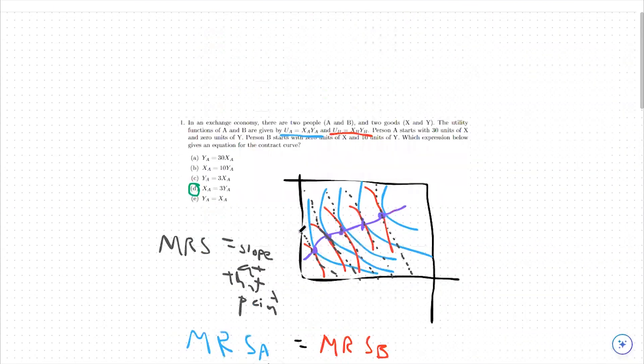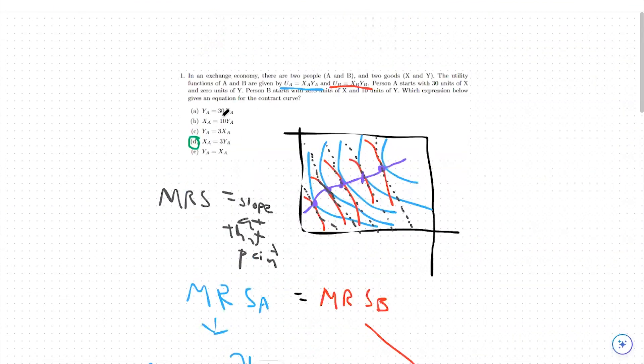Based off of the things available to us, the answer choices available to us, we're either in terms of YA or XA for these equations. So you just have to take a look, because you could get one third XA equals YA, for instance - that's the same exact contract curve. All we have to do is multiply by three on both sides, and then we're here. Either way, you can get to that answer. You just have to convert based on the answer choices available to you. So option D is correct here.